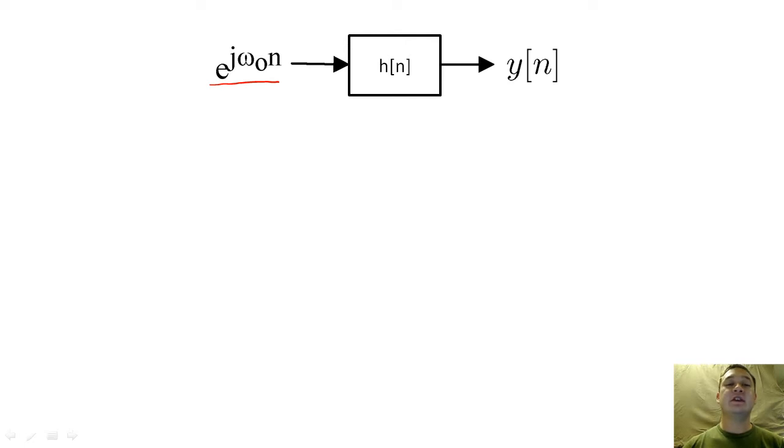Since the DTFT is linear, if we know how the system will respond to one e^(jω₀n) term, then we know how the system will respond to a collection of these terms because we can simply add them together.